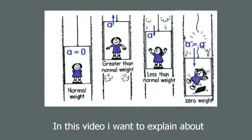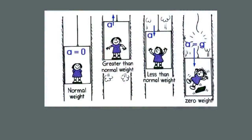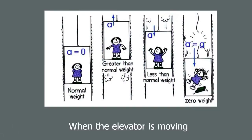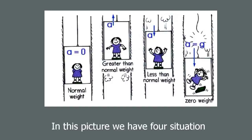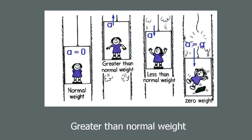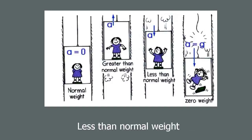In this video I'm going to explain why we have different weight when the elevator is moving. In this picture we have four situations: normal weight condition, greater than normal weight, less than normal weight, and zero weight.